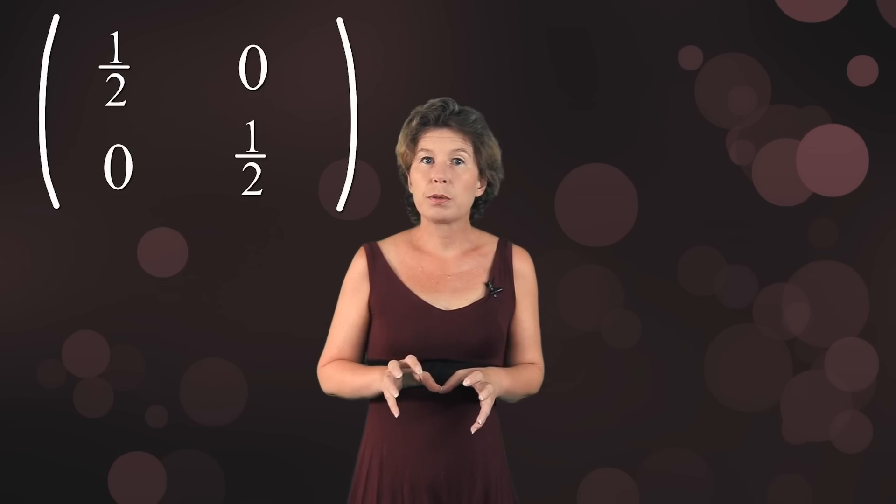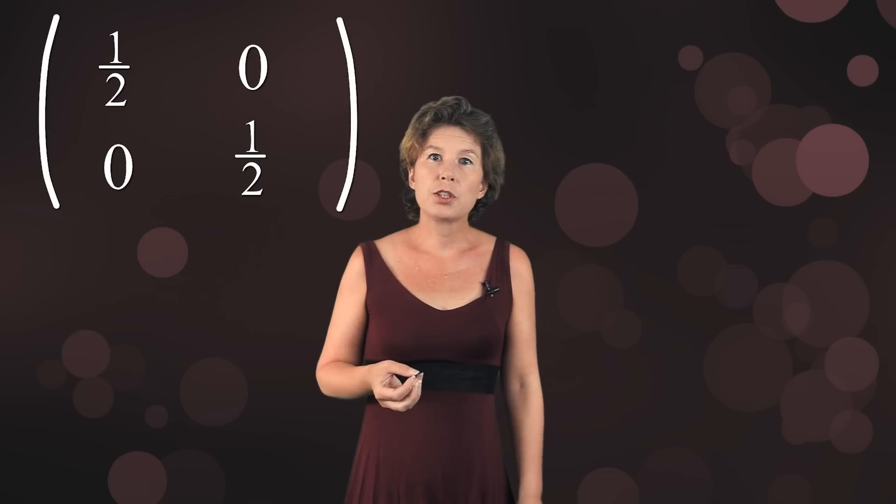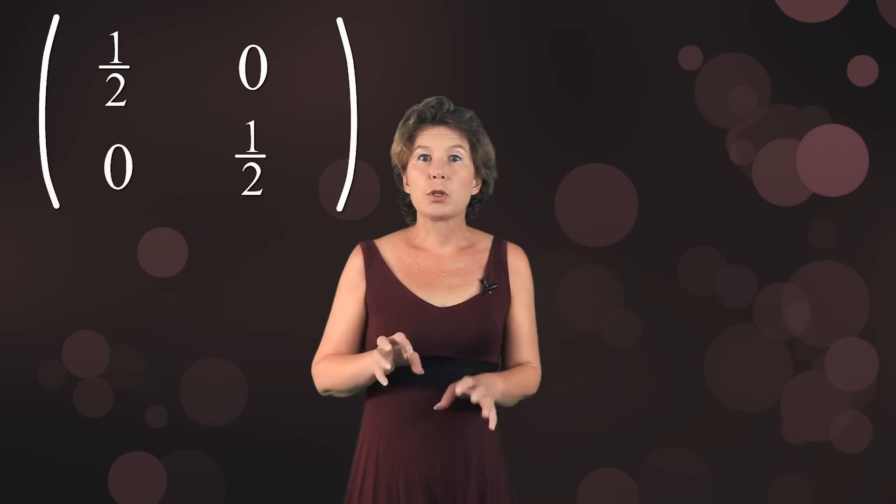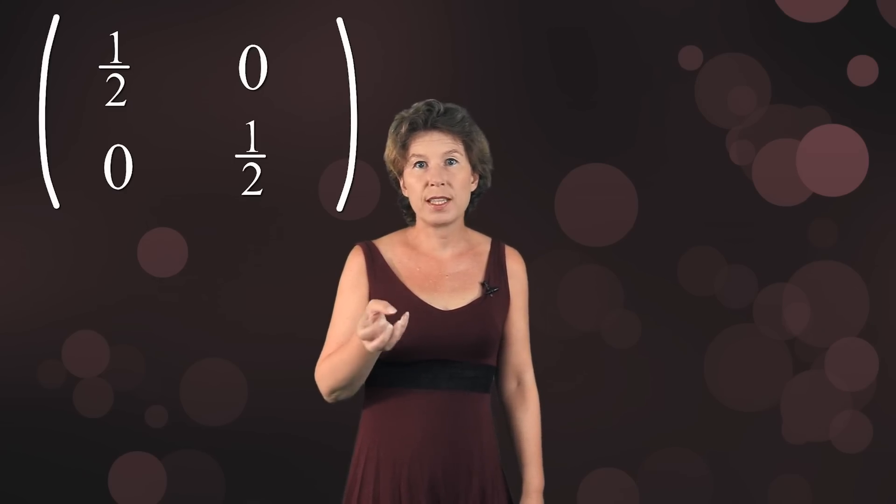What does this density matrix after decoherence describe? It describes classical probabilities. The diagonal entries tell you the probability for each of the possible measurement outcomes, like in quantum mechanics. But all the quantumness of the system that was in the ability of the wavefunction to interfere with itself have gone away with the off-diagonal entries.